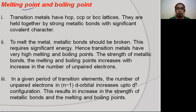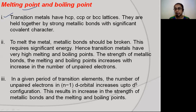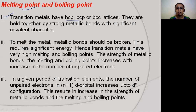Next is melting point and boiling point. Almost all transition elements are metals and show metallic properties - they are malleable, ductile, show metallic lustre, and have good thermal and electrical conductivity. Transition metals have hcp, ccp, or bcc lattice structures. The atoms in the lattice are held together by strong metallic bonds, which also have some covalent character.